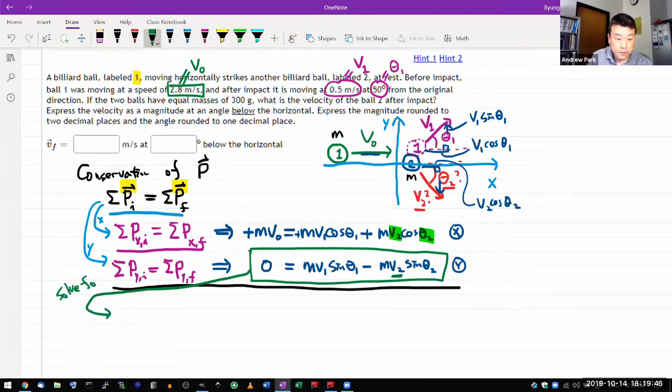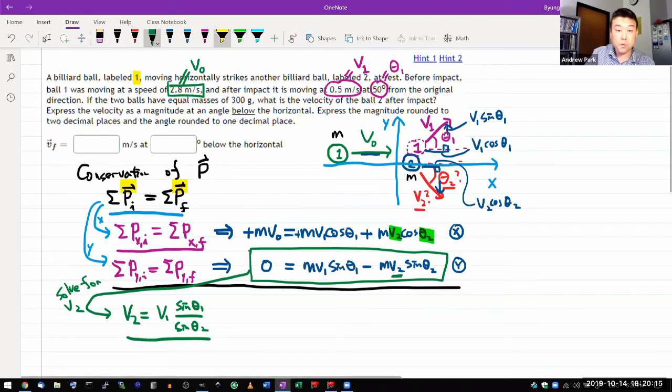So for V2, that means I'm moving this term to the left-hand side and dividing by M sine theta 2. When I do that, I get V2 is equal to, M's cancel out, V1 sine theta 1 over sine theta 2. All right, so I have this. That's my expression for V2. And once I have theta 2, then this is a formula I'll come back to, to actually solve for V2, as I get a numerical value for V2.